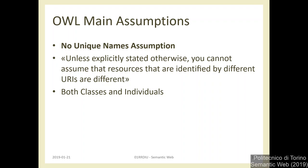Also inherited from RDF: different identifiers may refer to the same concept or object. We cannot assume different identifiers represent different individuals unless specified. We start with this assumption, and it applies both to individuals and to classes.